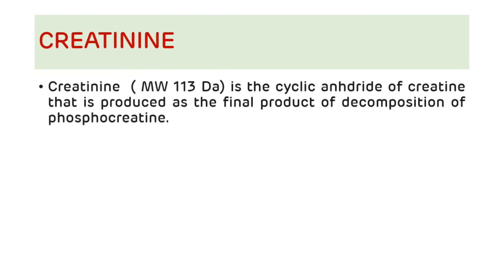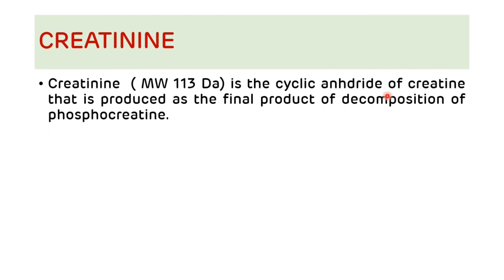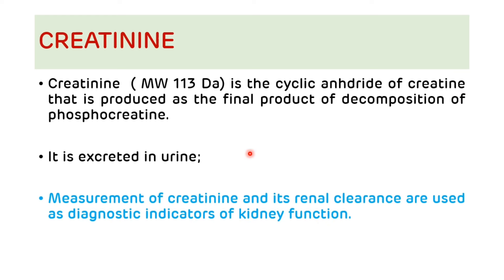First, some introduction regarding creatinine. Creatinine is the cyclic anhydride of creatine that is produced as the final product of decomposition of phosphocreatine. It is excreted in urine. Measurement of creatinine and its renal clearance are used as diagnostic indicators of kidney function. Estimation of serum creatinine is one of the sensitive tests included in renal function tests.